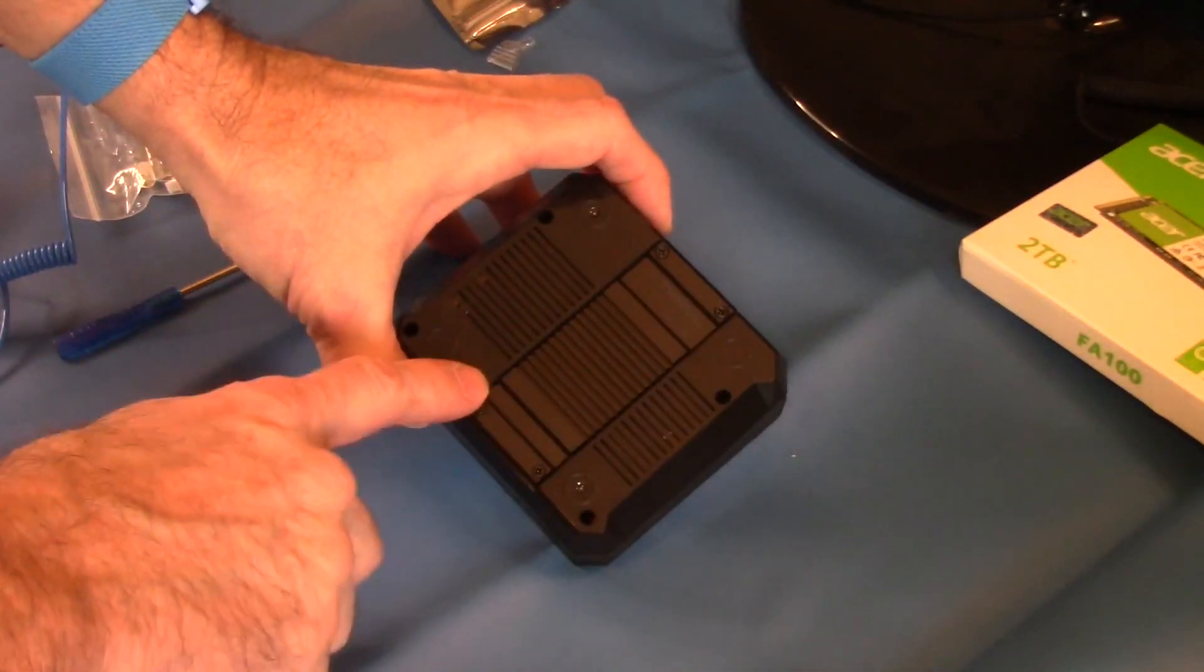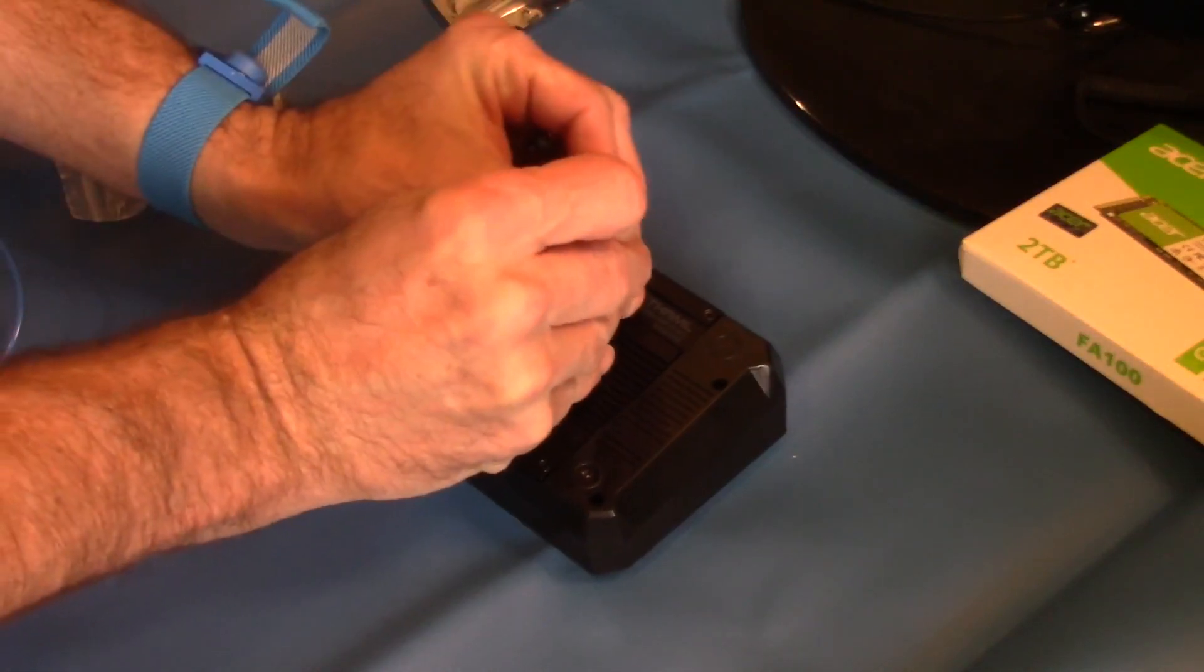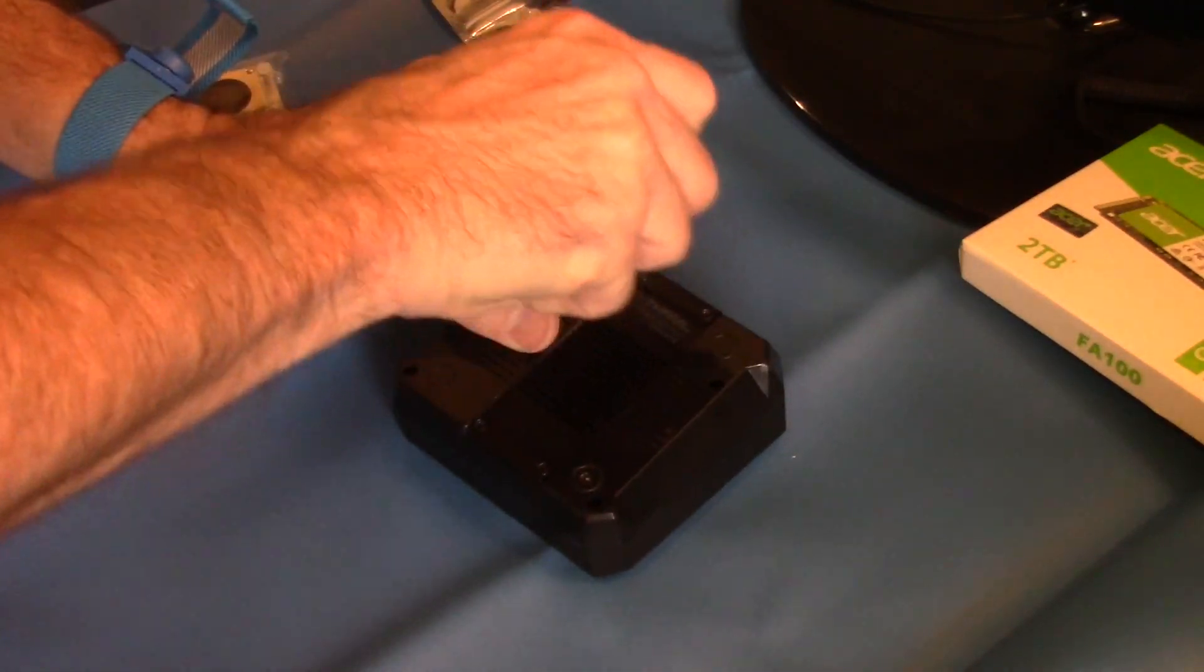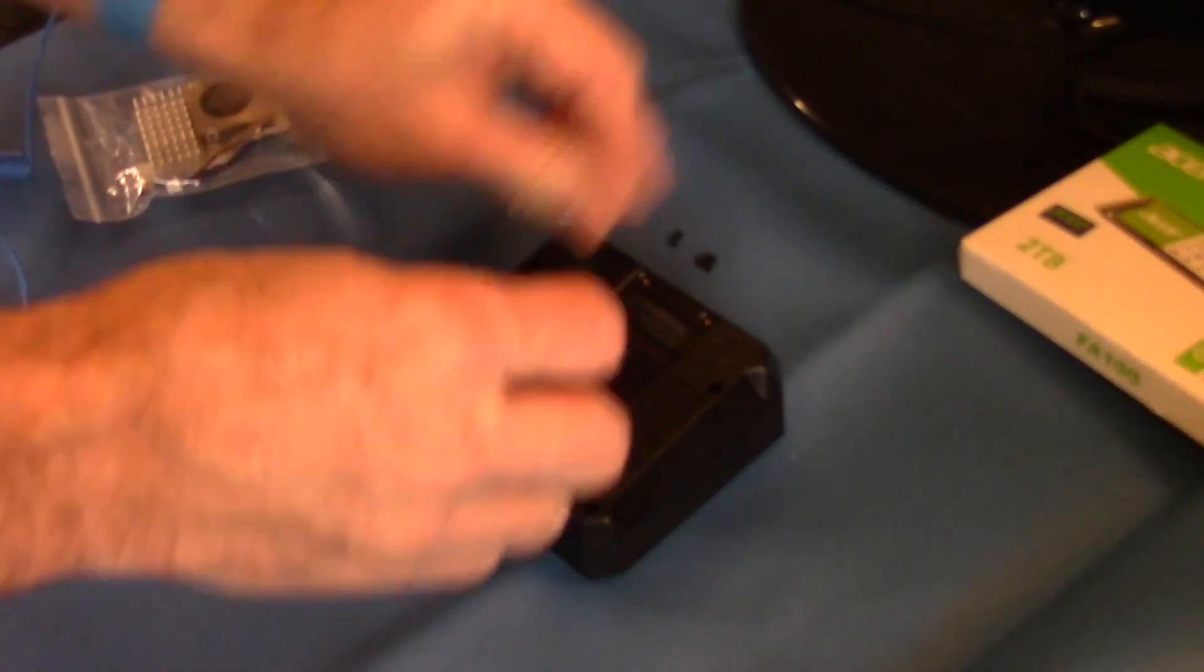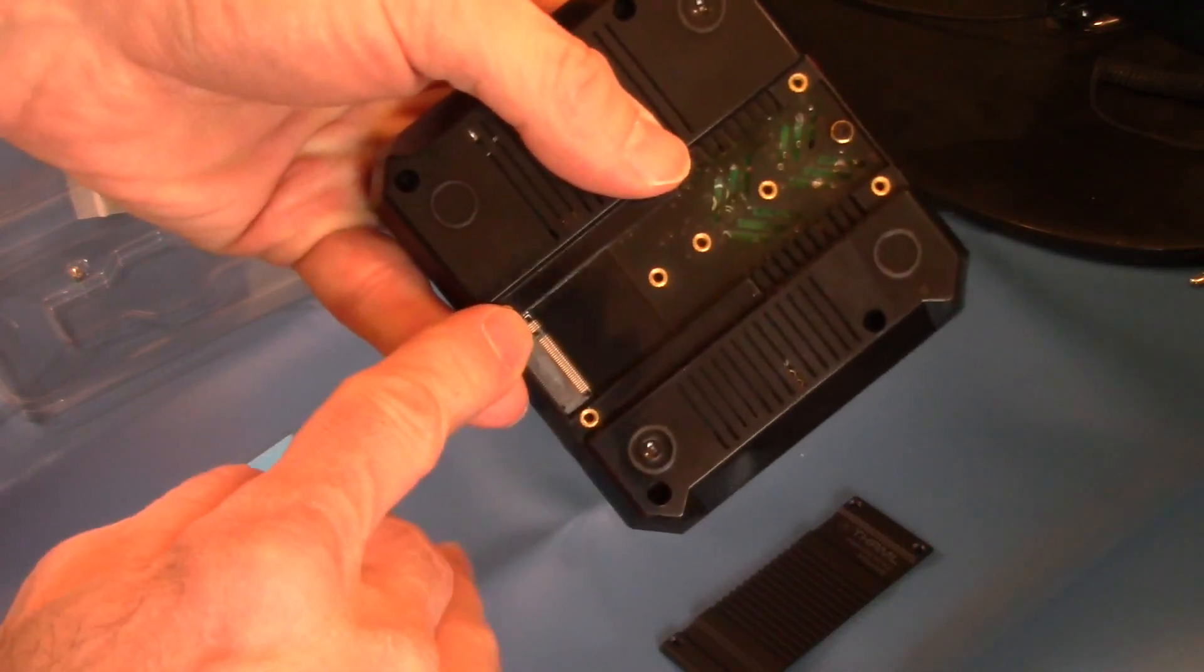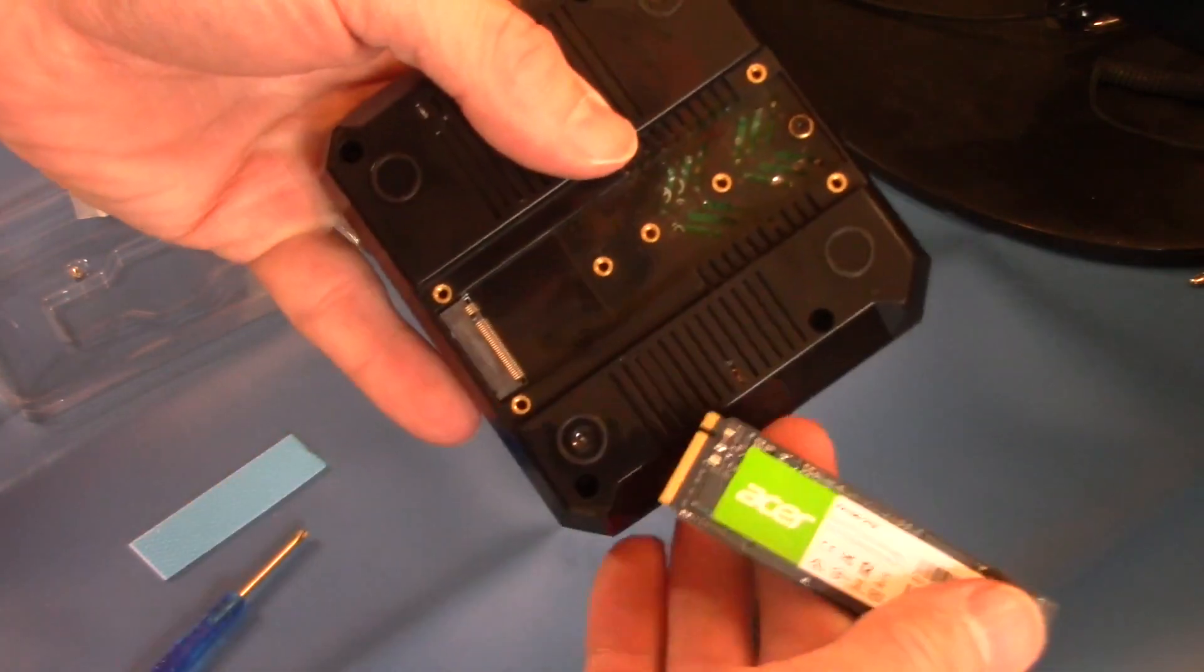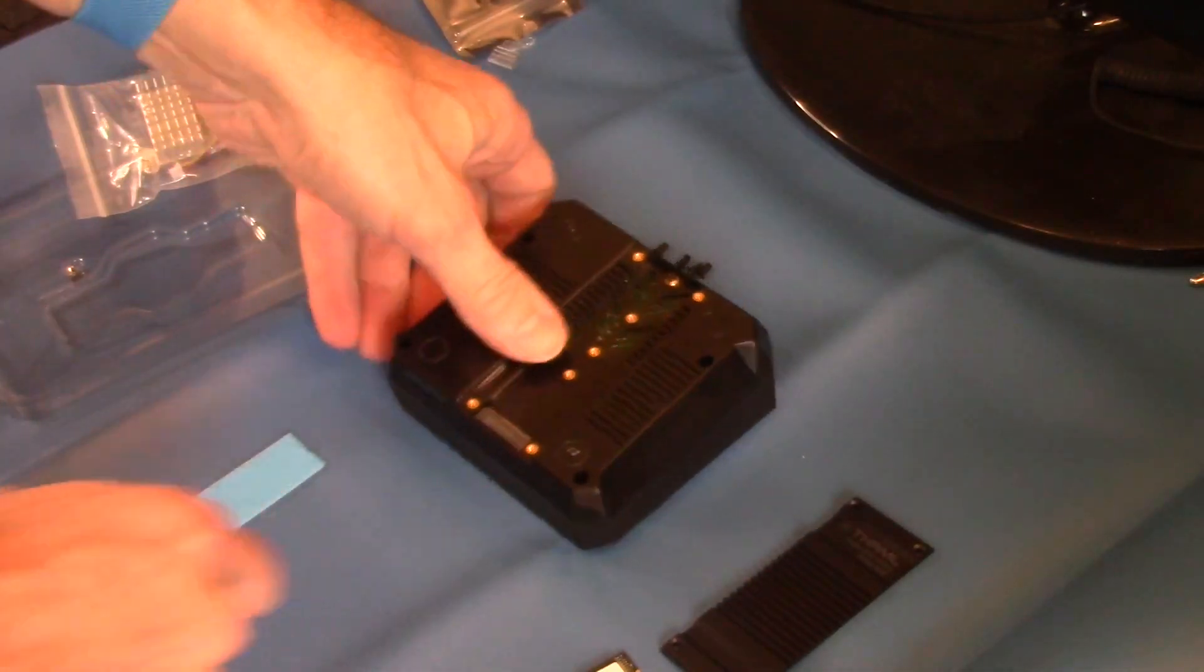Now we're going to remove these four screws to remove the heat sink for the NVMe. That's the connector for the NVMe. The notch should match the notch on the NVMe card.